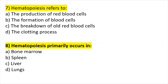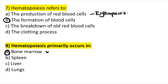Question seven: hematopoiesis refers to the formation of all blood cells. The production of red blood cells specifically is called erythropoiesis. Hematopoiesis primarily occurs in the bone marrow.